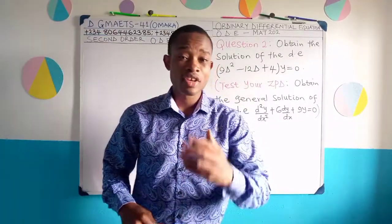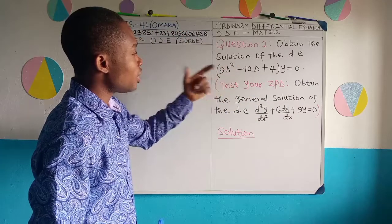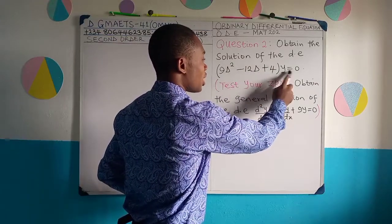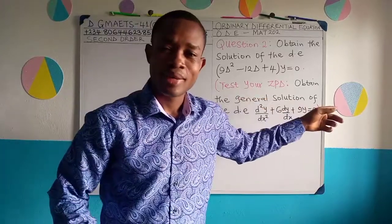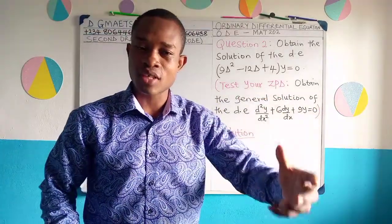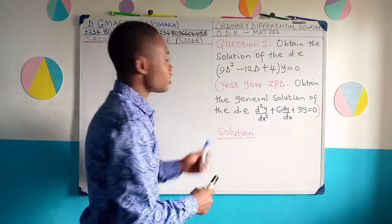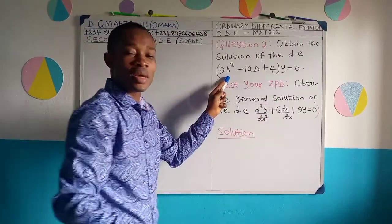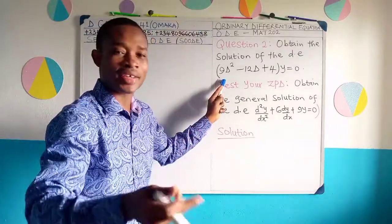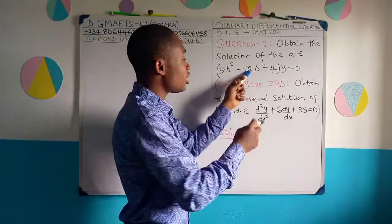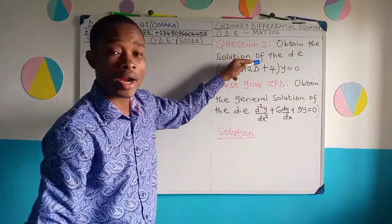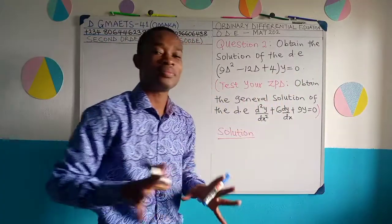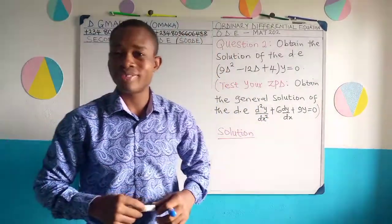In this video, we are going to take a second question. The question on the board is: obtain the solution of the DE (9D² - 12D + 4)y = 0. This is another form of presenting derivatives. This means 9 times the second derivative of y — that is 9 d²y/dx² — minus 12 times the first derivative dy/dx, plus 4y = 0.